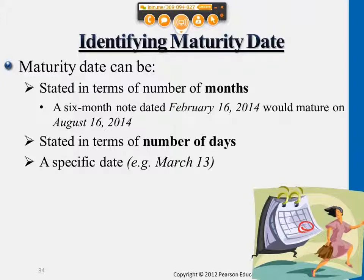If it's based on a year, just like the previous example, September 30, 2014 was the beginning date of the note. If it's a year note, then you don't change the month or date — you just add another year, so it becomes 2015.